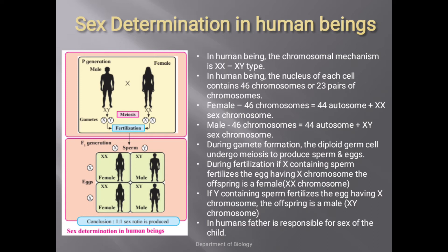Spermatogenesis produces haploid sperm: 50% of sperm contain 22 autosomes and an X chromosome, while the other 50% contain 22 autosomes and a Y chromosome. In females, the diploid germ cell undergoes oogenesis in the ovaries to produce only one type of egg — all eggs contain 22 autosomes and one X chromosome. Therefore, in humans males are heterogametic and females are homogametic.